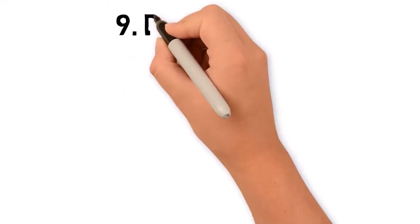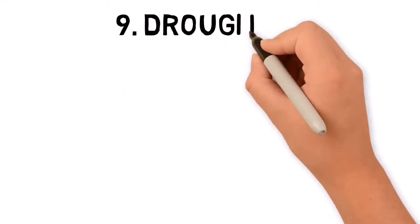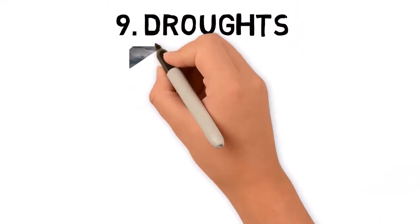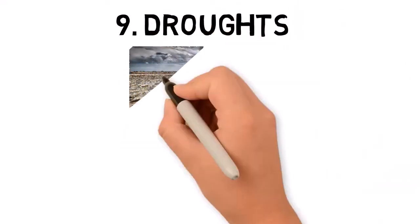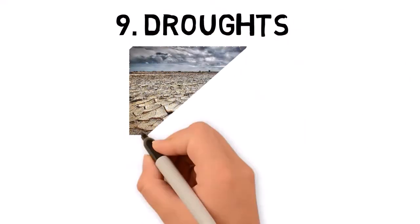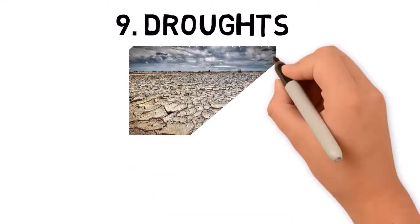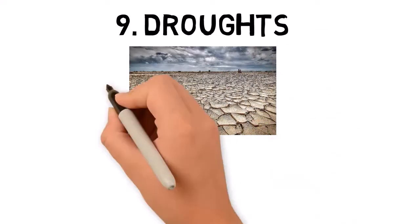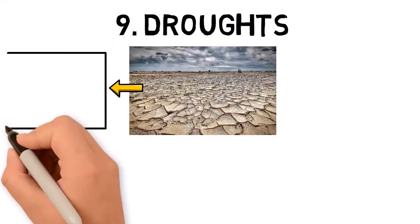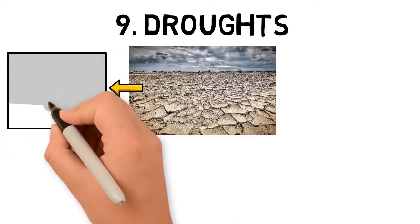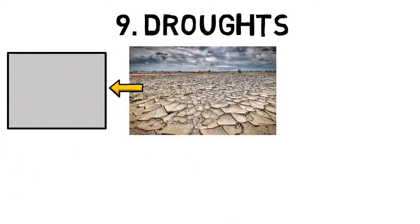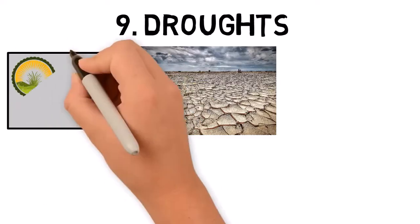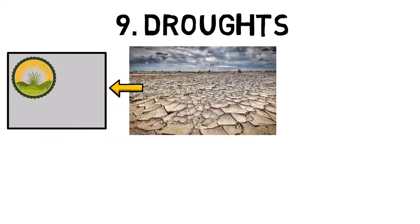Droughts occur when there is an extended period of below-average precipitation, leading to water shortages. Droughts can last for months or even years, causing significant impacts on agriculture, water supply, and ecosystems.